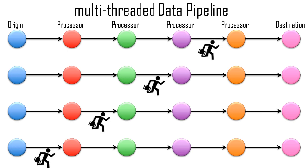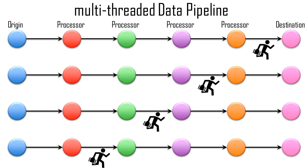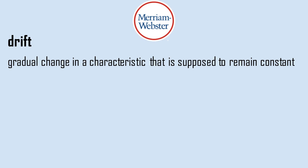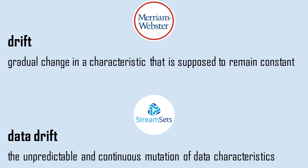Webster defines drift as a gradual change in a characteristic that is supposed to remain constant. According to the people at StreamSets, data drift is the unpredictable and continuous mutation of data characteristics. Their point is that when you create a data pipeline, you should assume that the origin will change characteristics about the data as time goes by. For example, the schema will probably slowly evolve and attributes will be added, changed, and dropped.